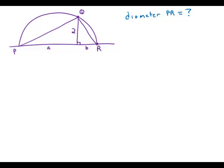If arc PQR above is a semicircle, what is the length of the diameter PR?